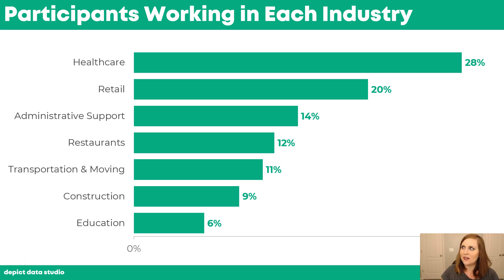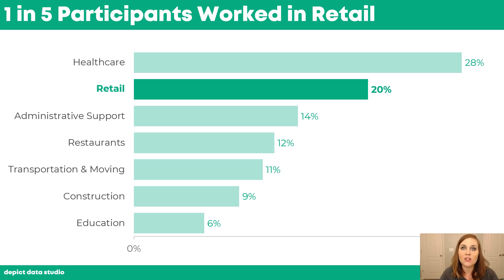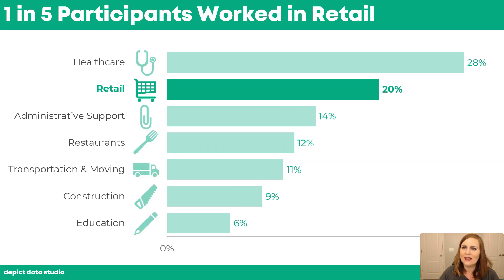Option F would be the storytelling version of that same bar chart. Now we've got the takeaway message placed squarely in the title — 'One in five participants worked in retail' — and we're also using the dark-light contrast to draw your reader's eyes right to the retail section, that magical 20 percent that we think they might care about.